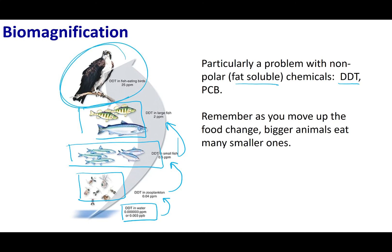Finally, the eagle comes along and eats the big fish. All the DDT stored in the fat of the fish gets concentrated in the eagle itself. The eagle isn't excreting it, leading to dangerous levels of DDT in wildlife. This process is called biomagnification — the idea that even a substance not very concentrated in the environment can accumulate because it's stored in certain places and not spread out.